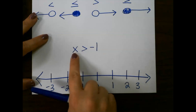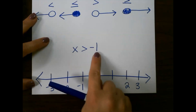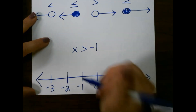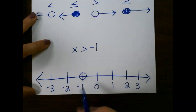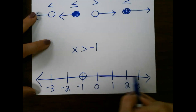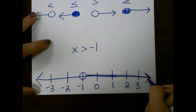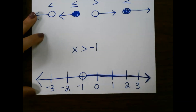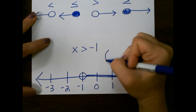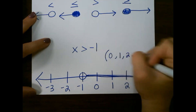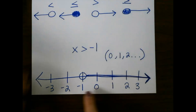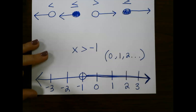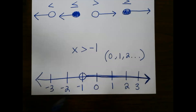Let's look at some examples. X is greater than negative 1. So my circle is going to go on negative 1, and since it has to be greater than negative 1, negative 1 cannot be included in our solution set. So I can shade everything to the right of negative 1 on our number line, which means 0, 1, 2, and so on could be included. Anything less than or equal to negative 1 cannot be included. That's why this is an open circle.